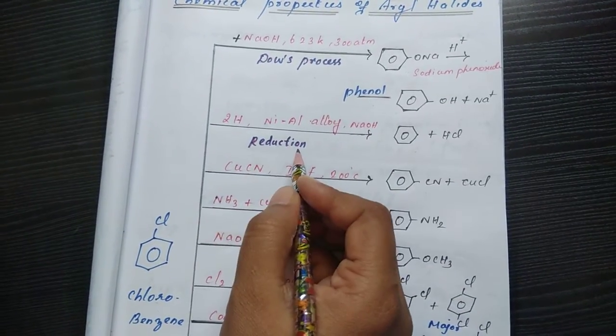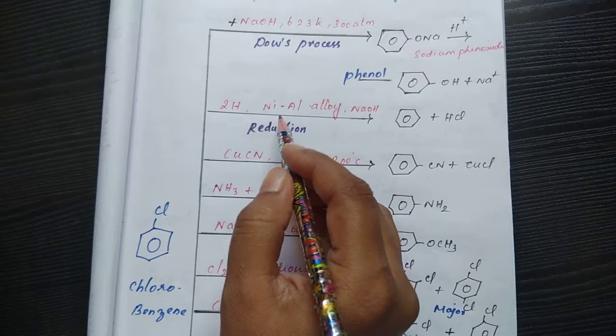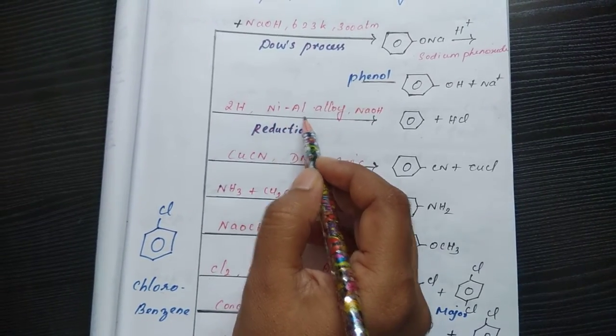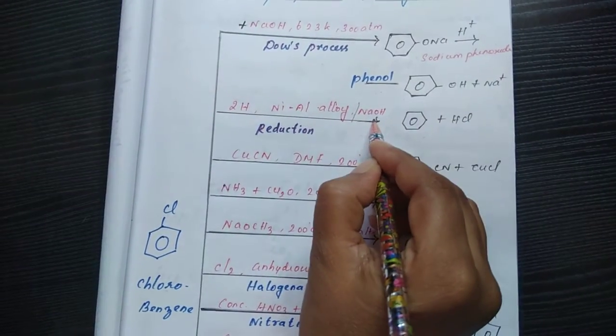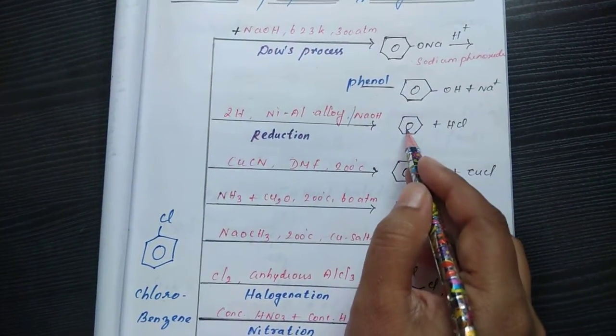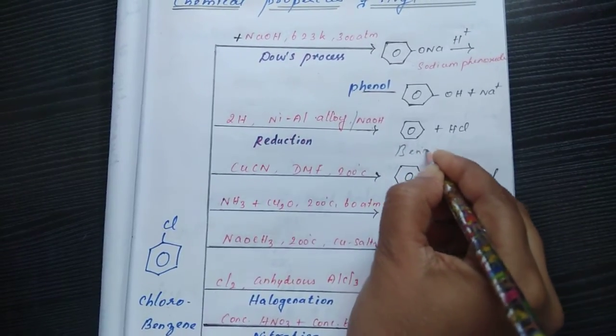Then another reduction. If I am going with chlorobenzene undergo reduction, addition of hydrogen, that is nickel aluminium alloy, in presence of nickel aluminium alloy and sodium hydroxide based media, it undergoes reduction to benzene. Benzene is the product.